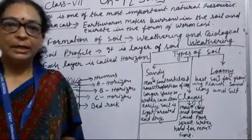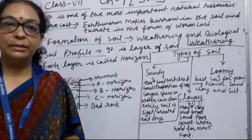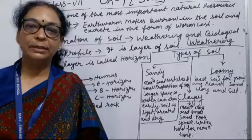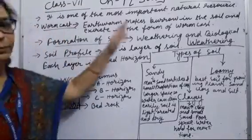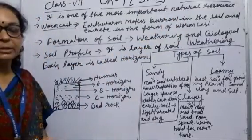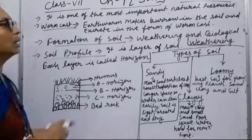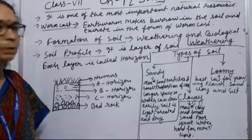So many organisms live in soil. Human beings use soil for so many things, like making bricks. That is why soil is very important natural resource. Now the second point is how soil is formed, so formation of soil. But before that, an important word is wormcast. What is the wormcast?